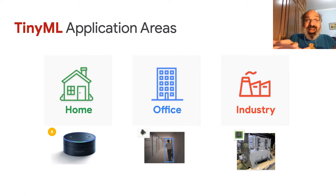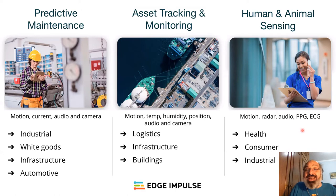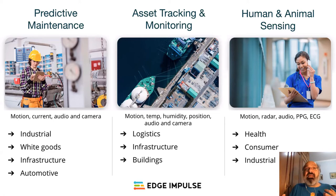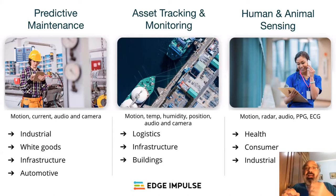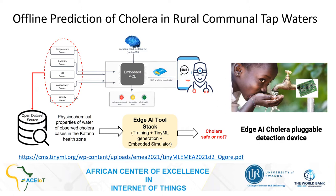TinyML can be found in several areas, including health and animal sensing. We're seeing devices helping to protect elephants in Africa. We're seeing this technology in very small equipment like smartwatches that monitor your heart, or small devices in your brain. There's a great project where researchers in Africa are trying to predict cholera in rural communal tap waters. It's fantastic.